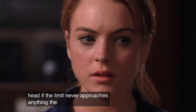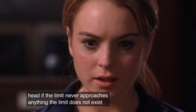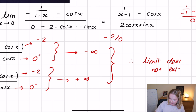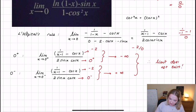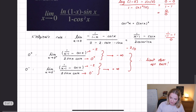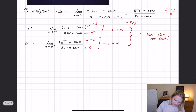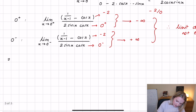So what we can say is this limit approaches negative infinity from one side of zero and positive infinity from the other side, which means therefore this limit does not exist — as Katie says in the film. That's the first way we can evaluate this limit using L'Hôpital's rule. The second way is through a Taylor expansion.